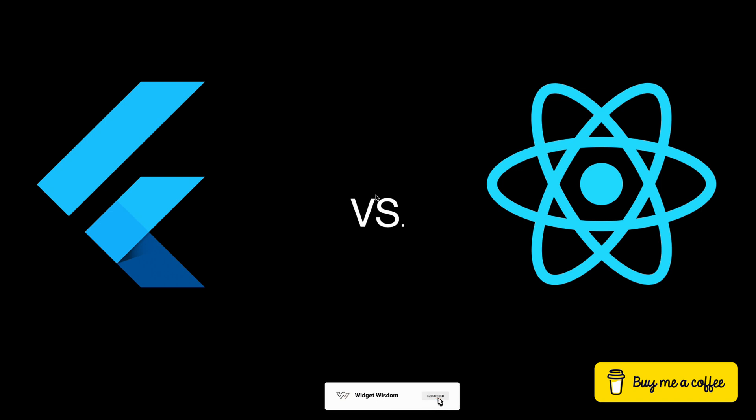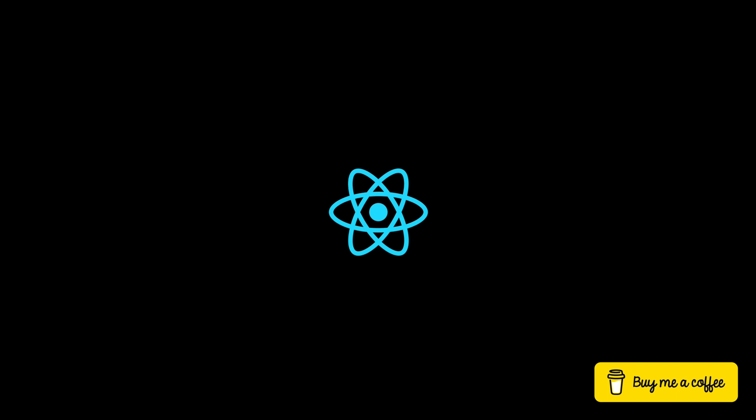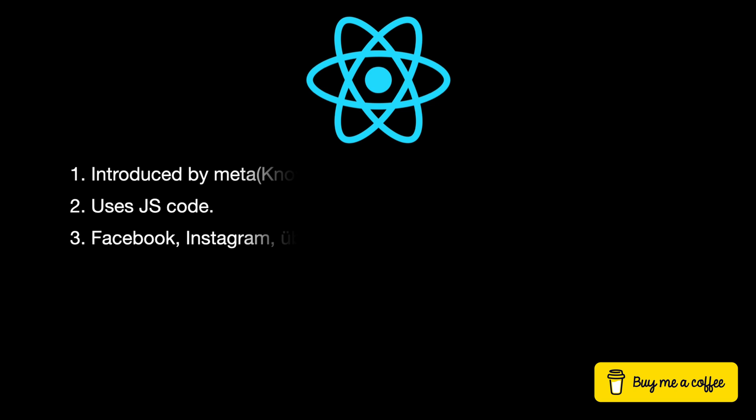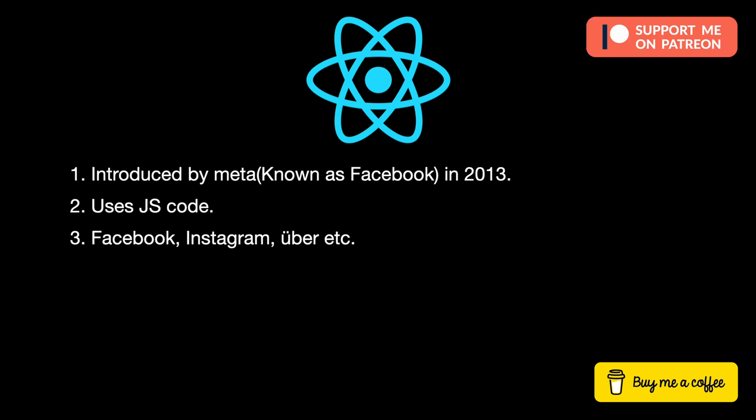React Native — the Jedi of the cross-platform realm. React Native is the mobile app powerhouse introduced by Meta in 2013. It's like the superhero of the coding world, using JavaScript to bring Android and iOS platforms together in harmony. Major players like Facebook, Instagram, Uber, and even the big W, Walmart, swear by React Native's superpowers.